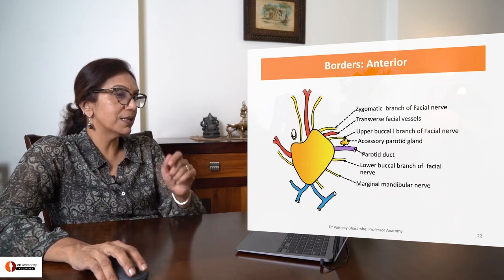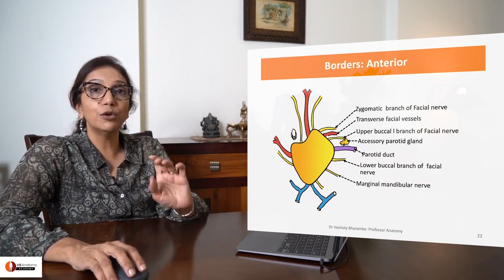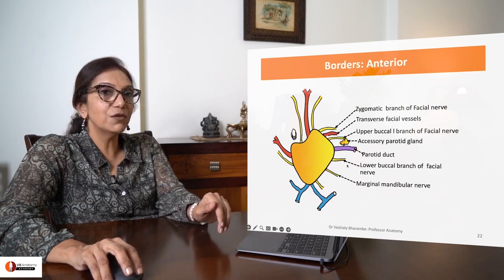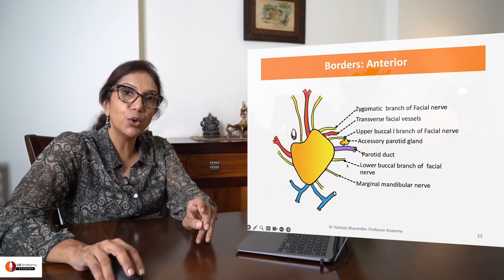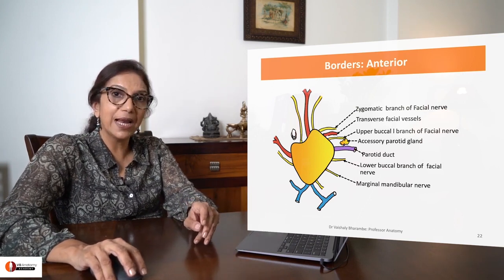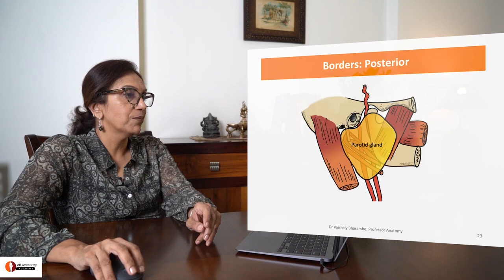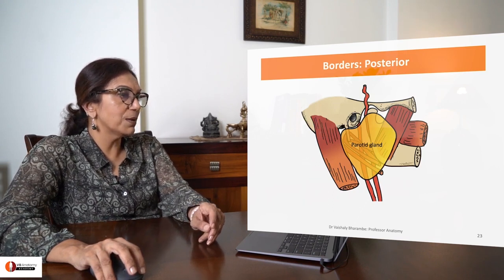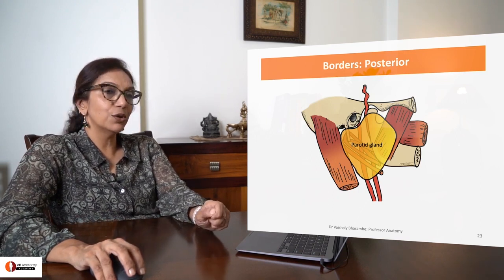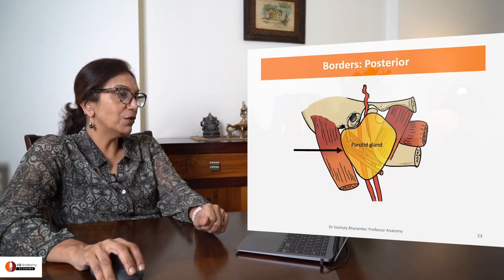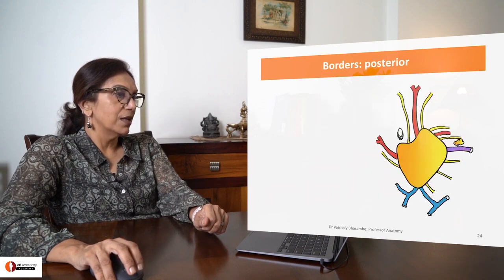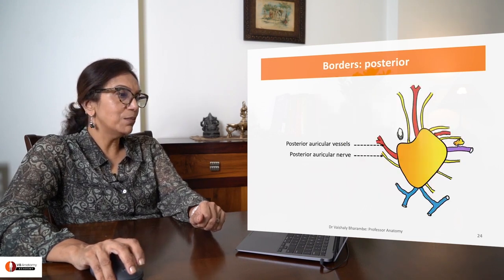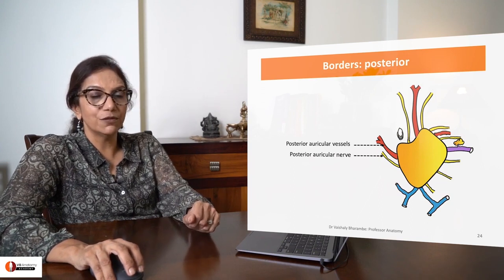Below the lower buccal is the marginal mandibular nerve. These are all structures which are emerging from the anterior border of the parotid gland. Let's talk about the posterior border, which is abutting the sternocleidomastoid. Emerging from here is your posterior auricular vessels and posterior auricular nerve.